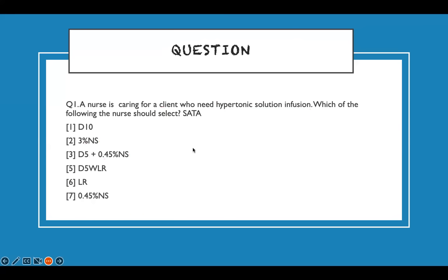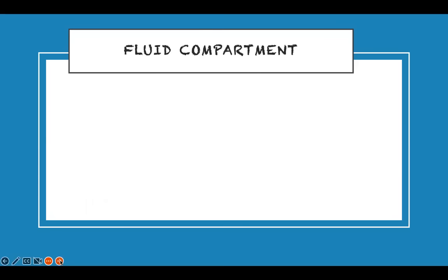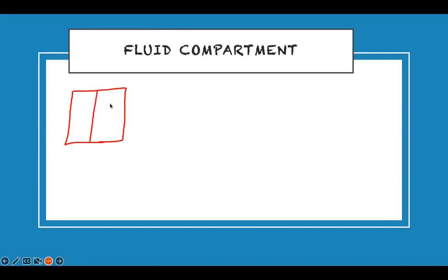Let's get into the lecture and you'll understand why those answers are right. Fluid is a very difficult topic, but I'll make it as easy as possible. Think about it — our body lives in compartments. Everything is compartmentalized. We divide it into extracellular fluid and intracellular fluid — inside the cell and outside the cell.